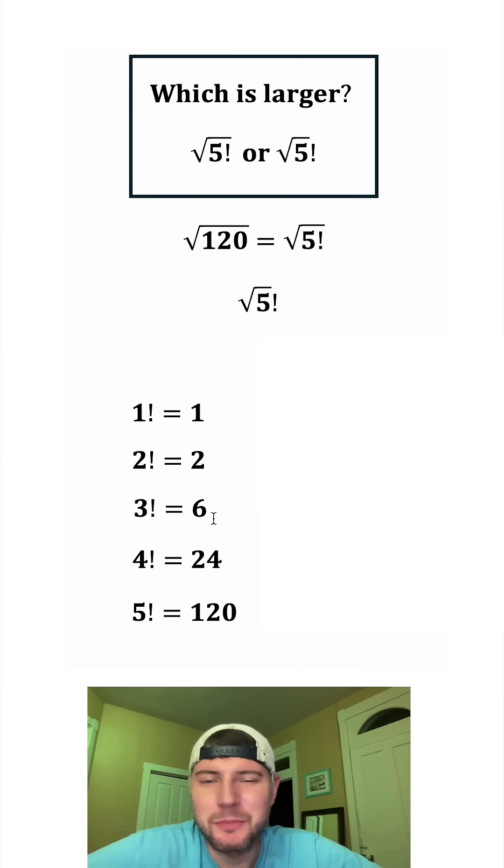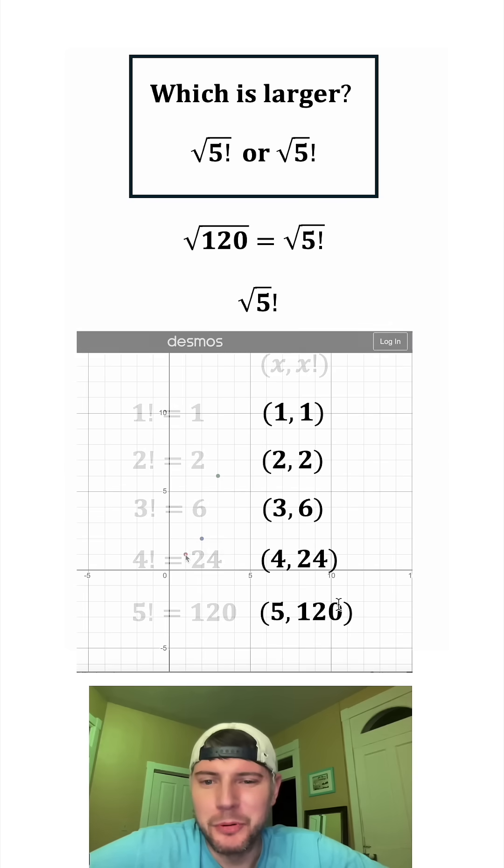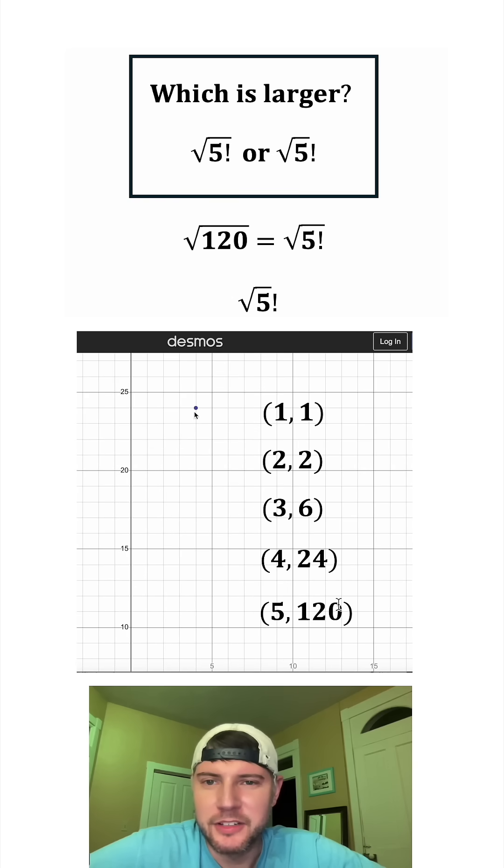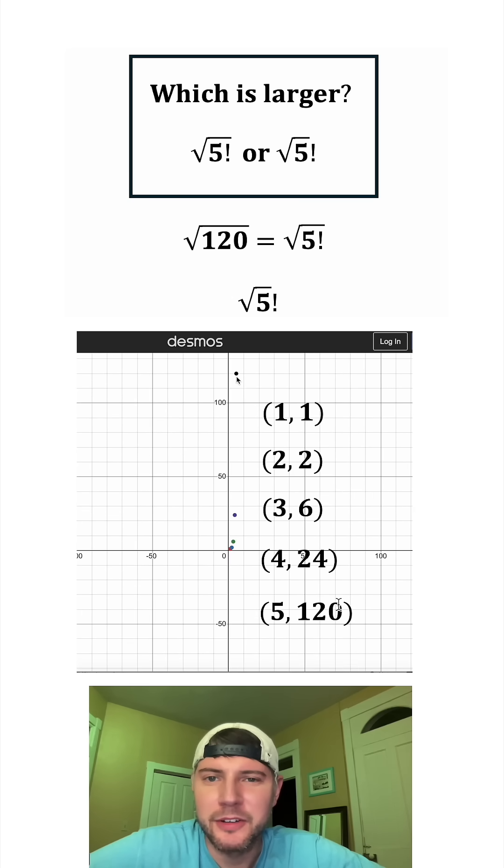We can express each of these as plotted points, where this number is our x value and this number is our y value. And here are the plotted points in Desmos. We have (1,1), (2,2), (3,6). Up here is the (4,24). And even way up high is the (5,120).